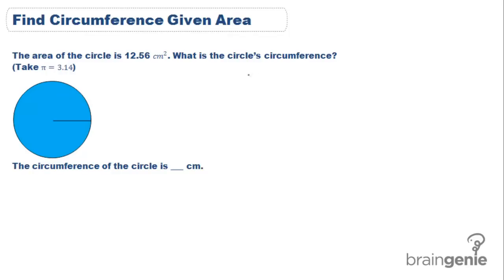Though tricky, we can also find the circumference if we know the area. Here we're told that the area is equal to 12.56 centimeters squared, and it asks us for the circumference if we know that pi is equal to 3.14.